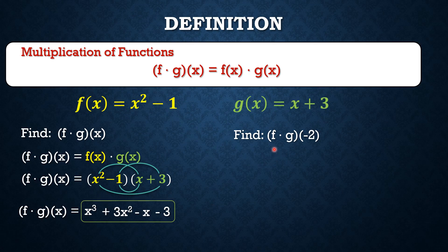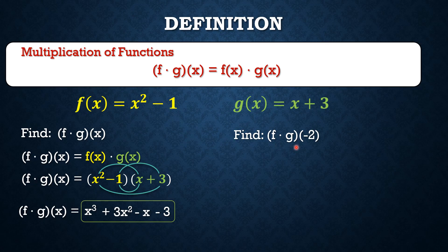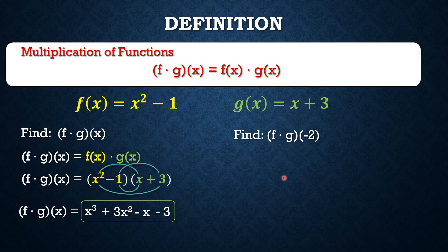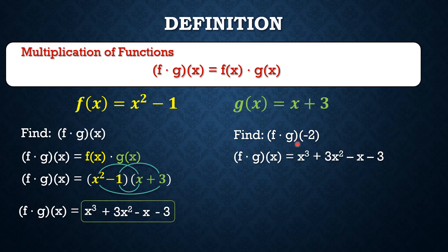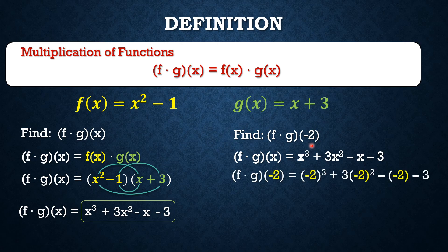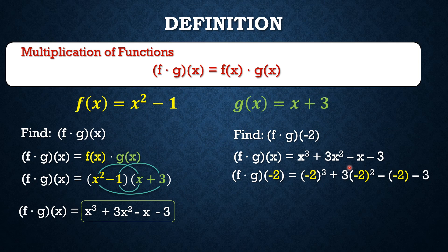In this case, we have no problem because we already got (f · g)(x), which is x³ + 3x² - x - 3. So what we're going to do is to evaluate this function when x is negative 2.